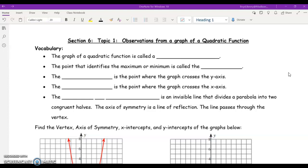In this lesson today, we're going to look at the observations from a graph of a quadratic function. So we're starting Section 6, or Unit 6, on graphing quadratics. We want to take a look at different features of quadratics.